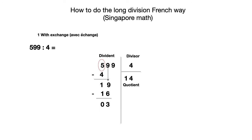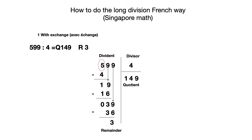Now for the third step, we slide down the number 9, so now we have 39. In 39, how many times 4? It's 9. 4 times 9 equals 36, and 39 minus 36 is 3. So this is our remainder. 599 divided by 4 equals 149 with a remainder of 3.